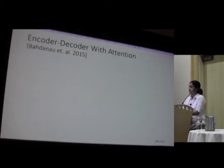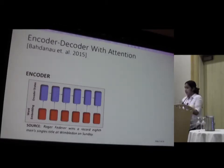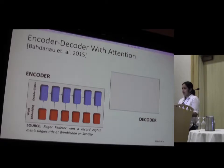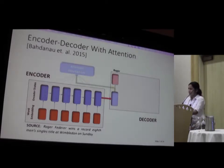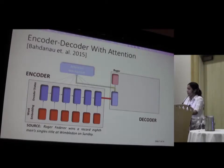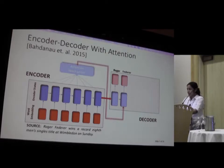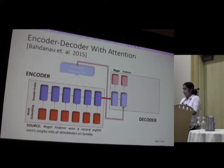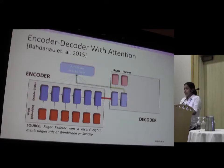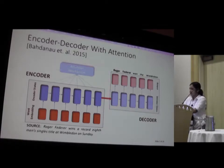One solution for this is attention mechanisms, where the decoder decides which part of the document to pay attention to while generating the next word. For example, if it has already generated the word 'Roger,' the decoder state is fed to the attention mechanism, which computes that it should pay attention to 'Roger Federer wins' — the first part of the document. That context representation is then passed back to the decoder to generate the next word. The key point is that the context vector changes at each decoder time step.